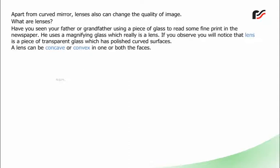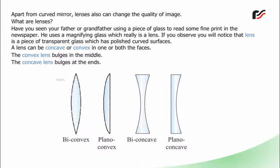A lens can be concave or convex in one or both faces. The convex lens bulges in the middle. The concave lens bulges at the ends.